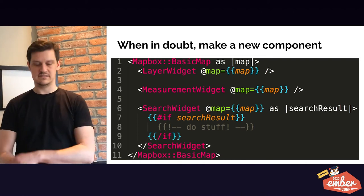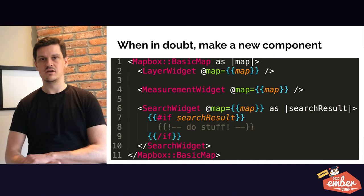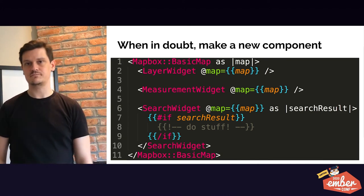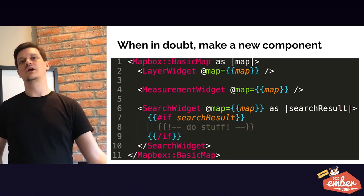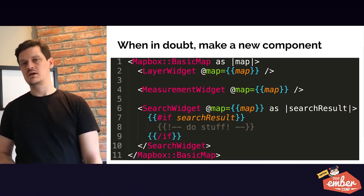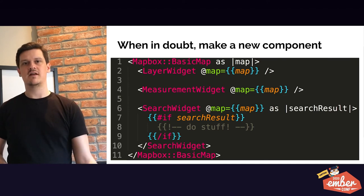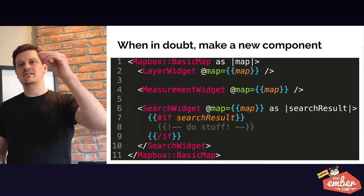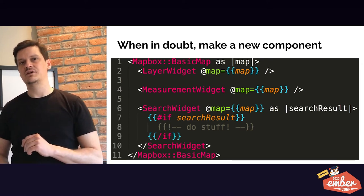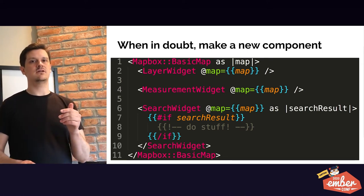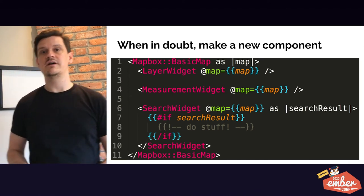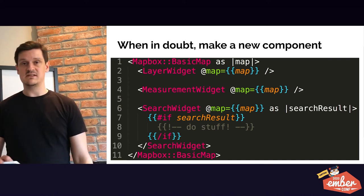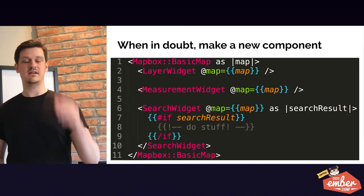For example, line two here is the measurement widget. We simply pass down the map into that layer widget, and all the layer concerns happen there. Line four, measurement widget — pass down the map. It's really just separating concerns and giving things their dependencies that they really need. All these things depend on a map instance. It makes it easier to test, makes it easier to split out things.